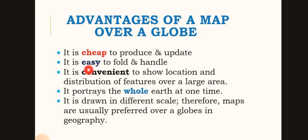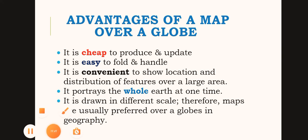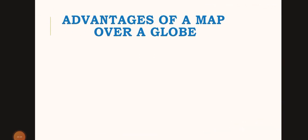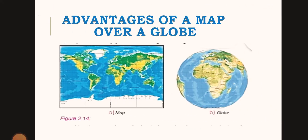In summary, the advantages of a map over a globe are: it is cheap, easy, and convenient. It can show the whole earth at one time and can be drawn at different scales.